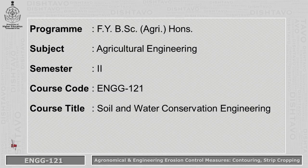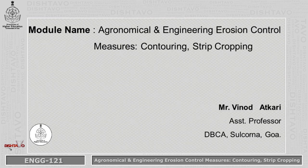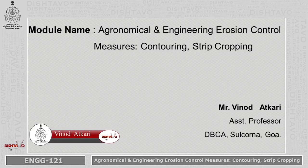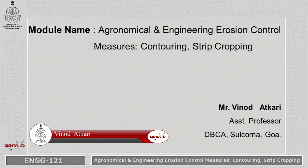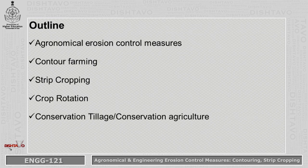Welcome all the students. Today we will see Module 5 for the program 1st Year B.Sc. Agriculture Honours, subject Agricultural Engineering, Semester 2nd with Course Code Engineering 121 and Course Title Soil and Water Conservation Engineering. The name of the module is Agronomical and Engineering Erosion Control Measures, Contouring and Strip Cropping. I am Mr. Vino Datkari, Assistant Professor at Don Bosco College of Agriculture, Sulkorna K.P., Goa.